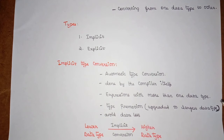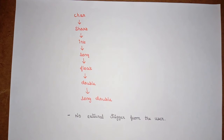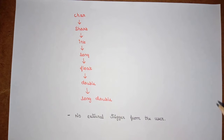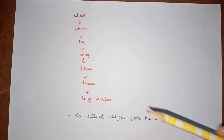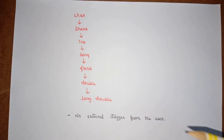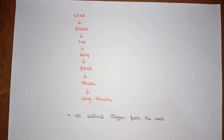And why are we going for this type conversion? In order to avoid data loss, we are going for this type conversion. The implicit type conversion is an automatic type conversion — the compiler by its own will do this conversion. It will do this when there is a necessity to convert a lower data type to a higher data type, when we need an upgradation from lower data type to higher data type.